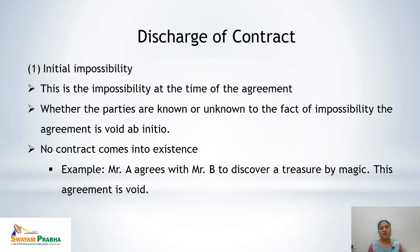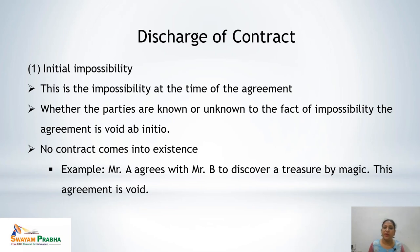Initial impossibility means the impossibility existed at the time of the agreement. The parties may or may not have known the fact that it was impossible to perform. If such impossibility exists, the agreement is void ab initio — void from the very beginning — meaning no contract ever came into existence. For example, if A agrees that he would discover treasure by magic, this agreement is impossible to perform from the very first stage and is void ab initio.